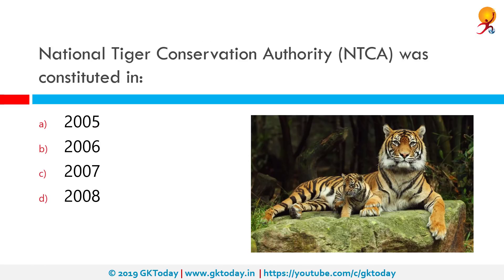The National Tiger Conservation Authority was constituted in which year? The correct answer is 2005. The National Tiger Conservation Authority was established in December 2005 following a recommendation of the Tiger Task Force constituted by the Prime Minister of India for reorganized management of Project Tiger and the many Tiger Reserves in India.